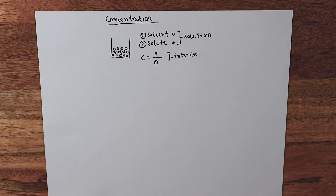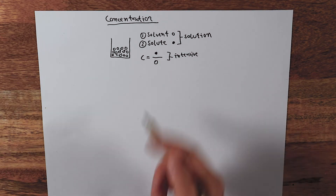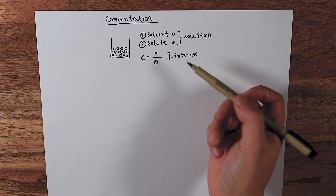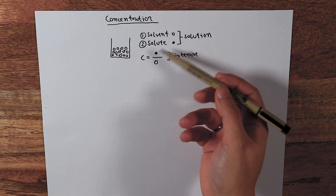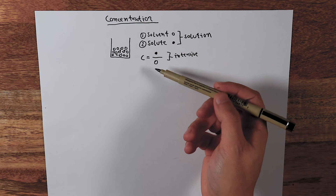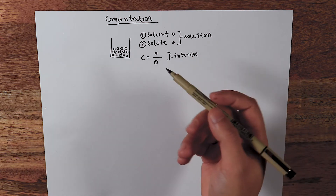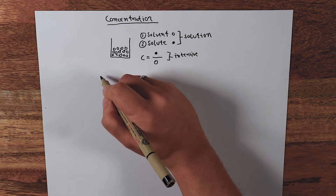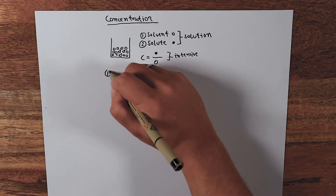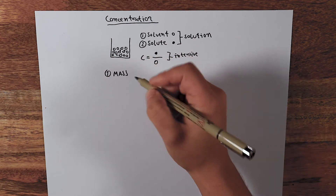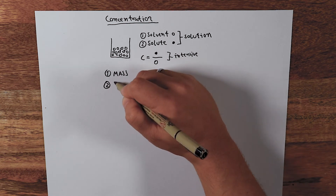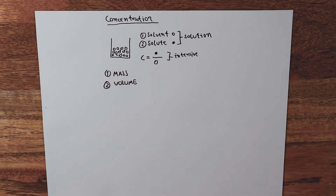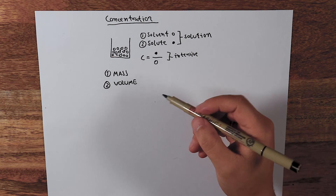If we think about this, the smallest relationship you could have is the ratio of the molecules or atoms of solute against the molecules of solvent. But this is not accessible to us — we cannot measure it directly. Instead, we have access to two main macroscopic properties: the mass of things, which we can measure, and the volume, which is another macroscopic property.